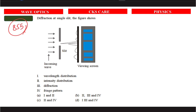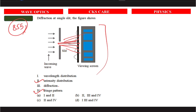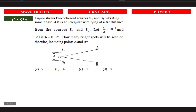Diffraction at a single slit: the figure shows the wavelength distribution and the intensity distribution. The fringe width and intensity distribution in the diffraction pattern and fringe pattern are the same, but the figure shows the same diffraction pattern.